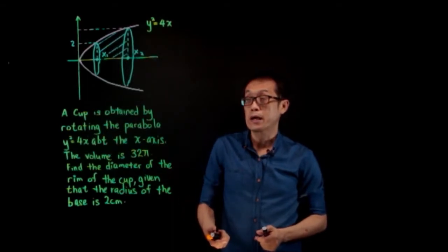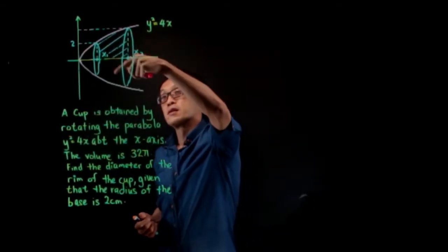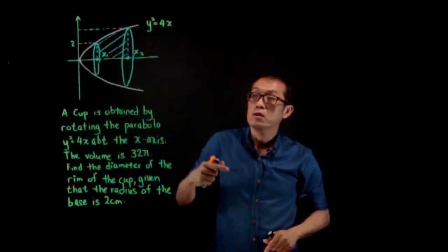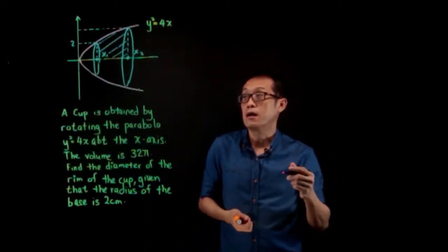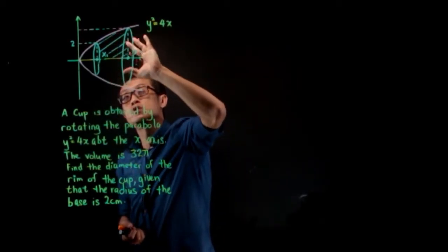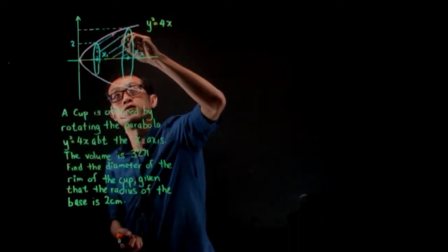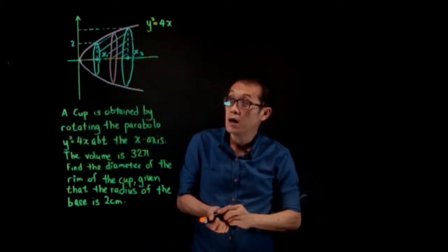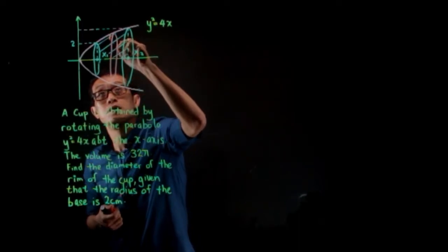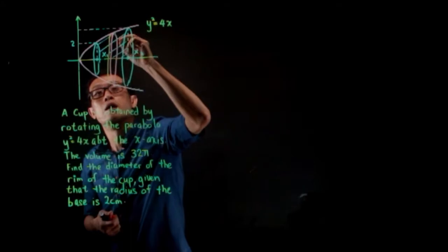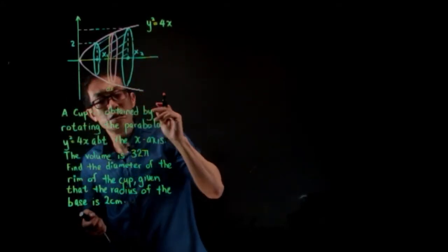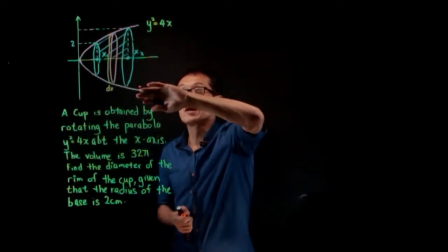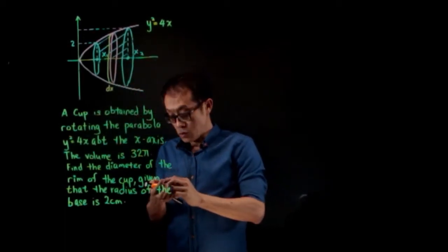We are given that the volume of this cup is 32π. Let us find the volume of the cup and equate it to 32π. We find the volume generated when this region is rotated 2π about the x-axis by dividing it into small disks. Let me draw one particular disk — this is the surface of the disk, and this is the thickness dx. Imagine the thickness is so small it approaches zero, giving us a circular disk.